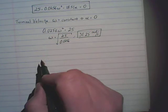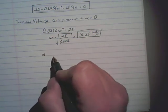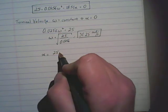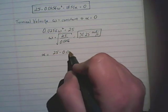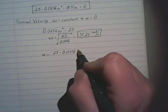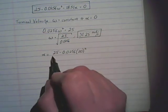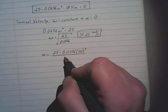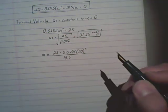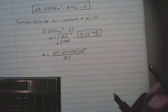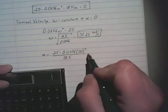So, rearranging things a bit, what we find out is alpha is equal to 25 minus 0.0256 times that speed of 20 radians per second squared, divided by 18.5. Let's see, I think I did that right. Looks like it. So, let's try this out.